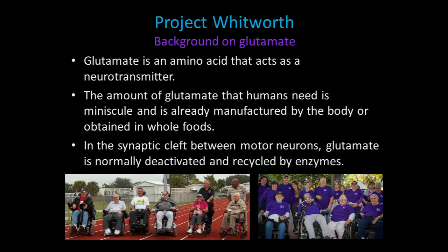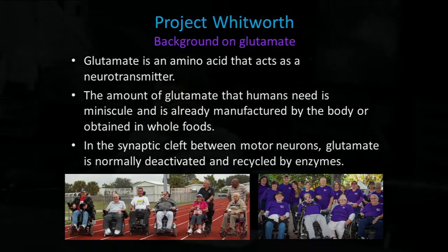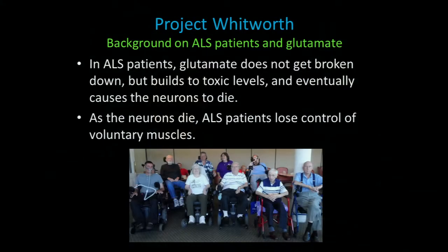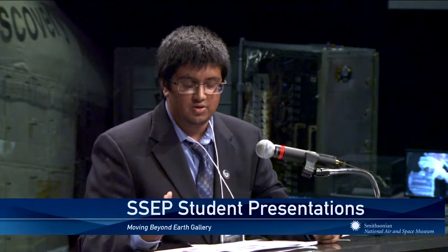Glutamate is an amino acid used as a neurotransmitter, normally found in the synapse between two different neurons. It's a naturally occurring amino acid that everyone has inside of them. In ALS patients, glutamate does not break down properly by enzymes. It builds up to a toxic level, which causes motor neurons to die, resulting in the loss of voluntary muscle control seen in ALS patients.